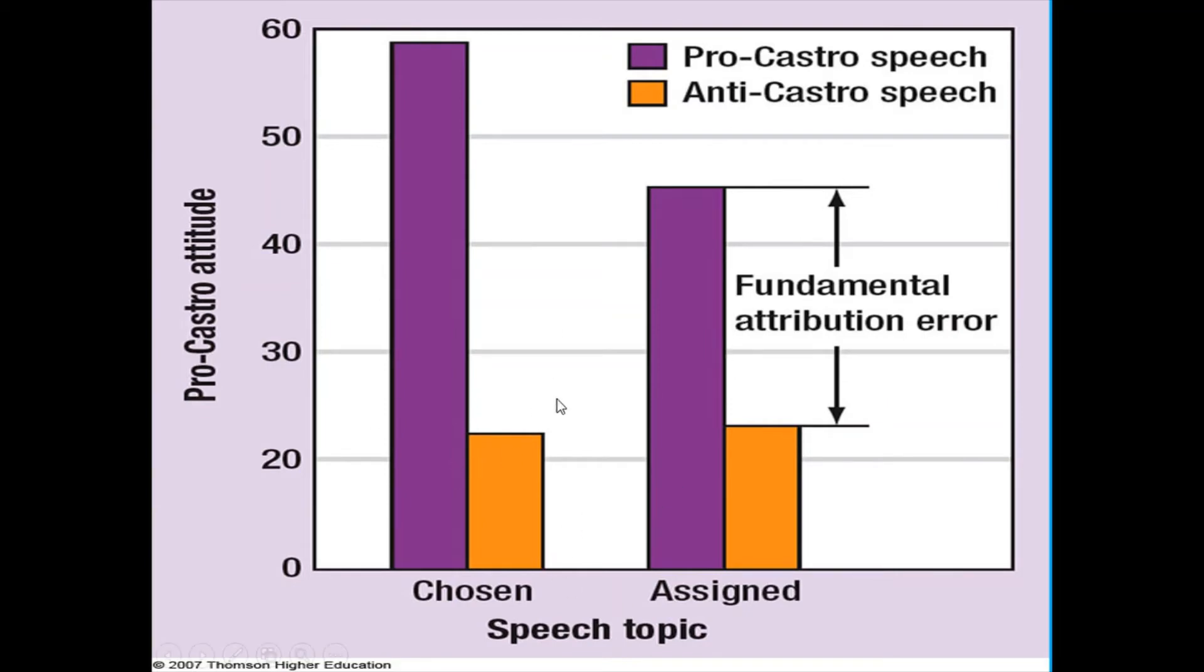In this study, participants are asked to read persuasive essays either for or against Fidel Castro. Participants are informed that the essays were written by students who had taken part in a previous version of this study. The participants are randomly assigned to conditions, and the conditions vary the type of information that participants are given regarding the writer of the persuasive essay. In the chosen condition, participants are told that the writer of the speech got to choose the stance of that speech, whether they wanted to write a pro-Castro speech or an anti-Castro speech.